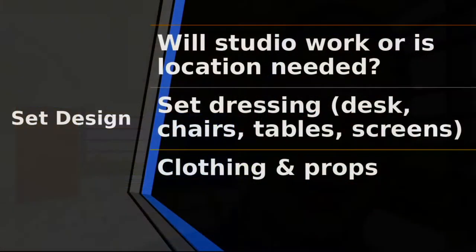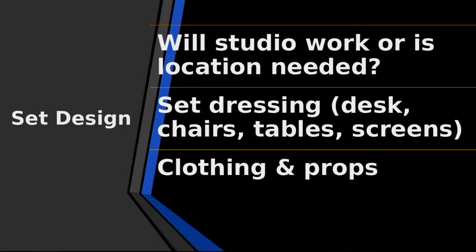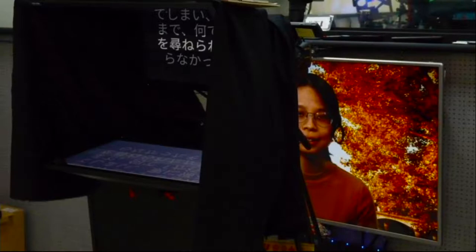You need to think about it beforehand, not come to the studio and say 'give me some idea what should I do' — that's already too late. Set dressing includes the things on the table, inside the room, on the walls — all of these things make the set look the way it does. Part of that is clothing and props. In this shot here we have an example of our talent reading from the teleprompter, and she's chosen this outside setting with fall leaves falling from the trees, and her clothes match.